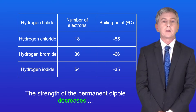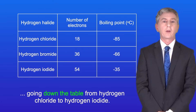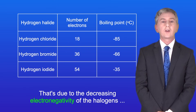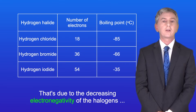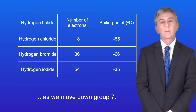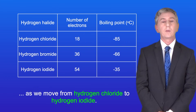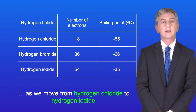The strength of the permanent dipole decreases going down the table from hydrogen chloride to hydrogen iodide, and that's due to the decreasing electronegativity of the halogens as we move down group 7. However, as you can see, the boiling point actually increases as we move from hydrogen chloride to hydrogen iodide.